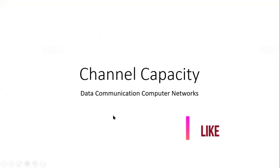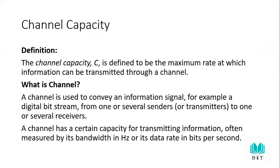We will explain the subject of channel capacity in computer networks. The definition of channel capacity, denoted as C, is the maximum rate at which information can be transferred through a channel. This is the definition of channel capacity.